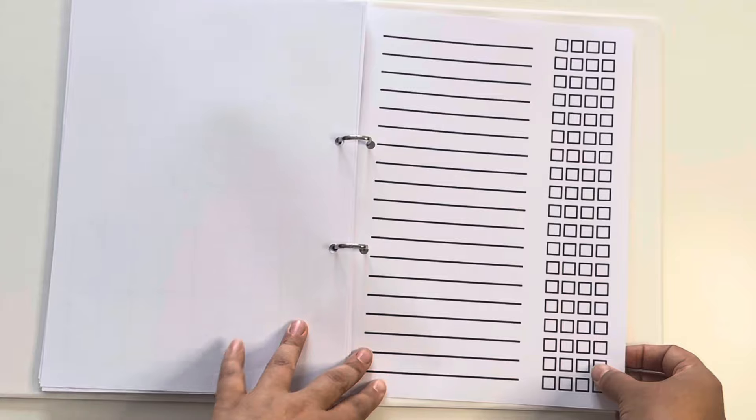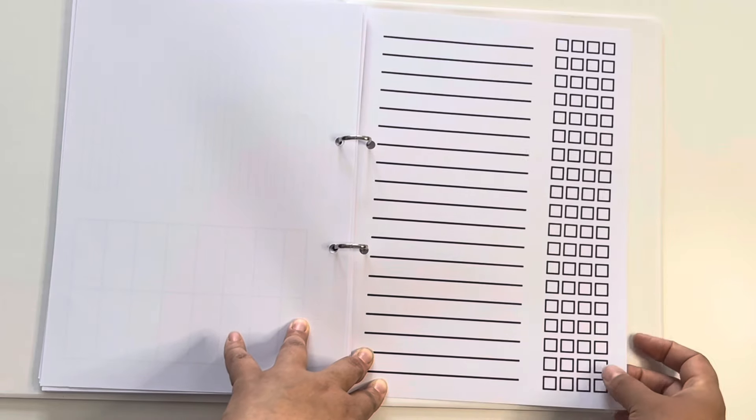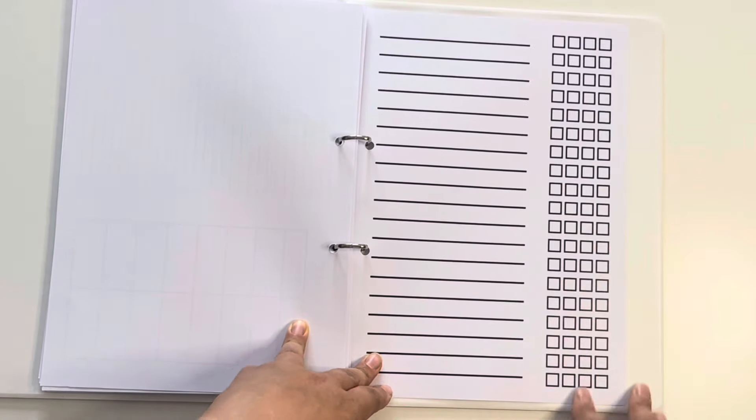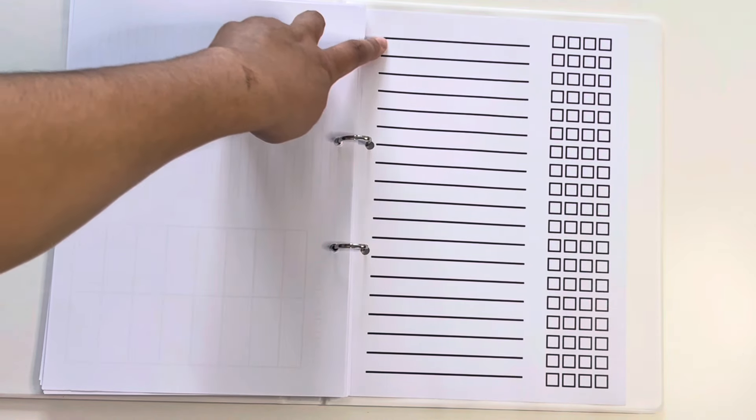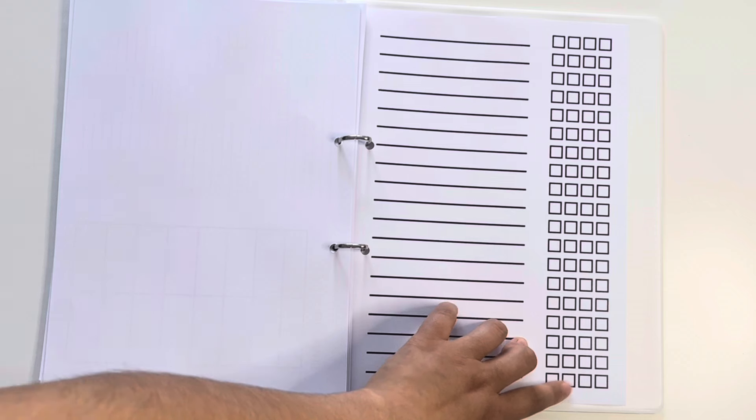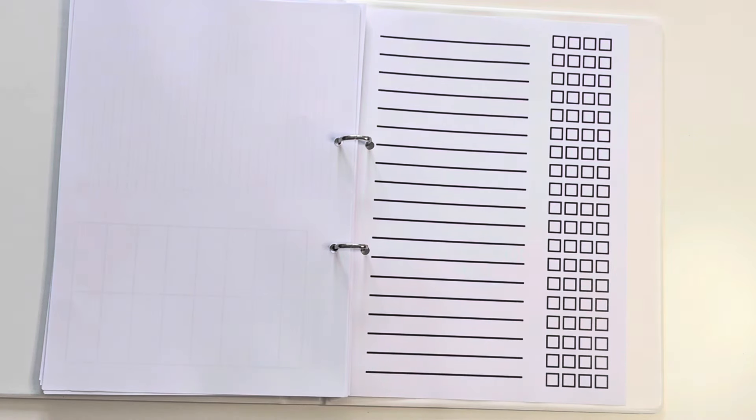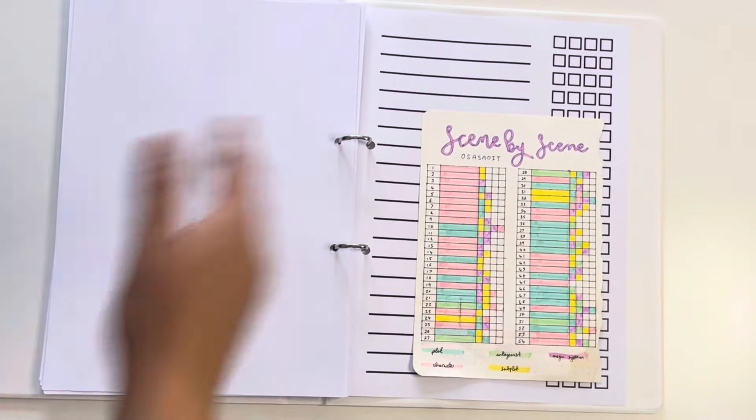And then we get to this lovely little thing right at the end, which is what I'm going to use for revisions. So each of them has a chapter. This is what happens in the chapter. And these boxes, and if I can find my piece of paper, I can show you exactly what I'm going to do with that. That is going to be this.